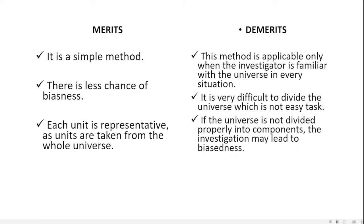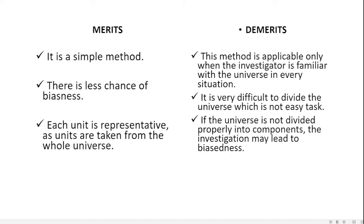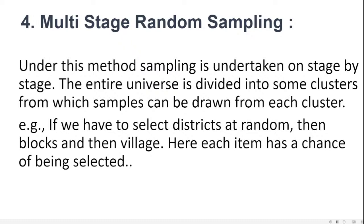Multi-stage sampling: under this method, sampling is done stage by stage. The entire universe is divided into clusters from which samples are drawn at each stage — for example, selecting a district at random, then block, then village. Each item has a chance of being selected. A merit is that it covers a large area and reduces the number of units. It is a flexible method compared to others.